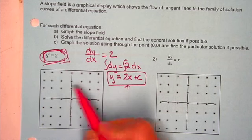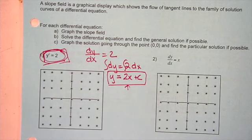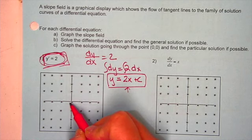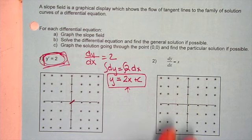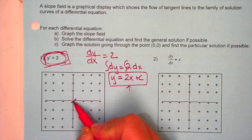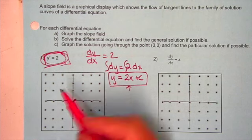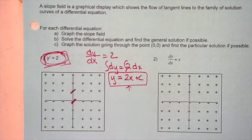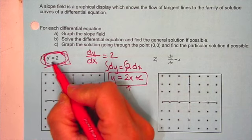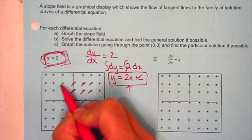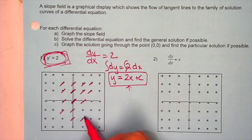At every single point on the graph, the slope of this equation should always be 2. So at (0, 0), the slope is 2, and I'm going to draw a tangent line segment — a real small segment — that has a slope of 2. At (0, 1), the slope is also 2. It tells me y prime is always 2 regardless of where you're at, so I'm going to put a little tangent line segment with slope 2 everywhere. Everywhere, your tangent line segment should be the same because the slope is 2.